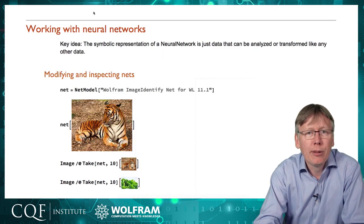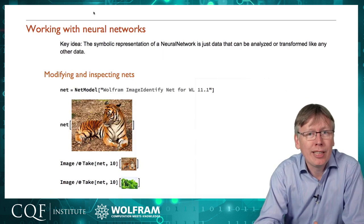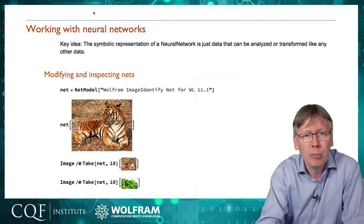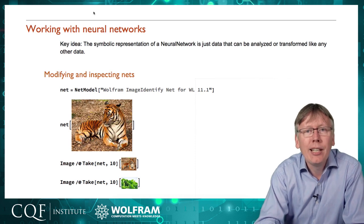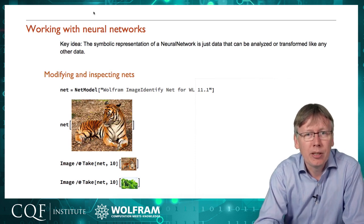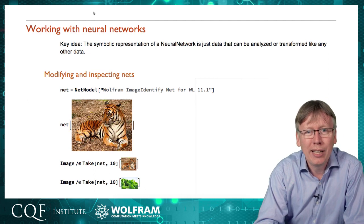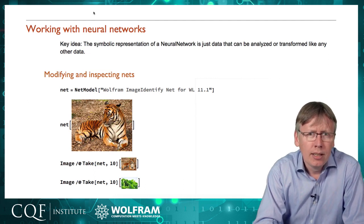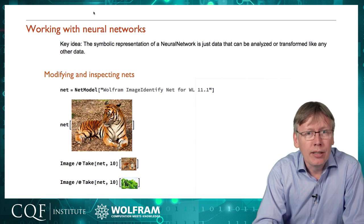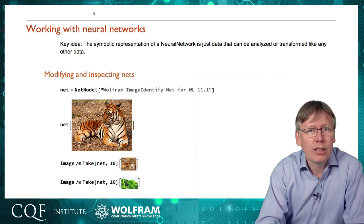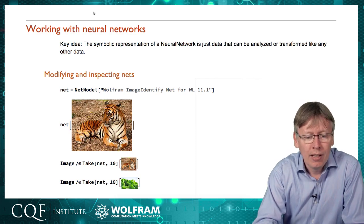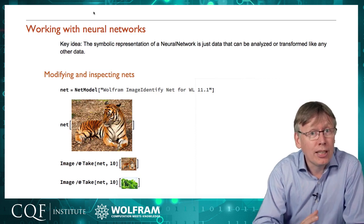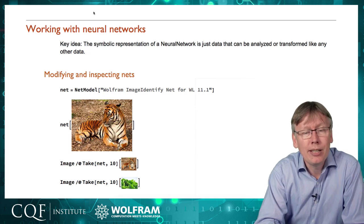Now, these models that we're downloading have a full symbolic representation in terms of all of those layer objects that I showed you a moment ago. And one advantage of that is we can treat that just like any other piece of data within the Wolfram language because the Wolfram language has no problem handling symbolic objects. So, one use of that for example is to build new networks that use existing networks just as components within a much more complicated set of layers. Another thing we could do is reach inside the symbolic object and find out things about its state.